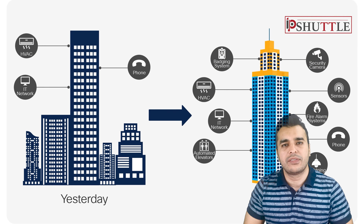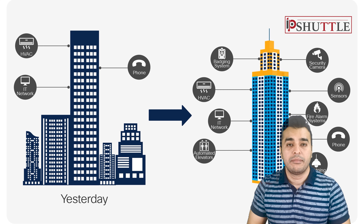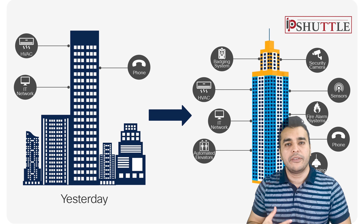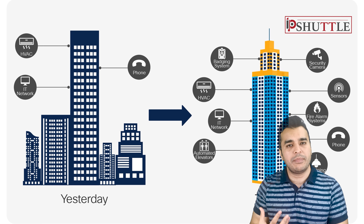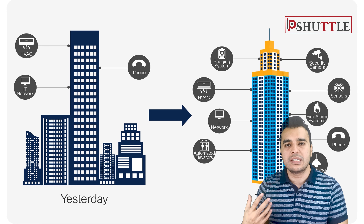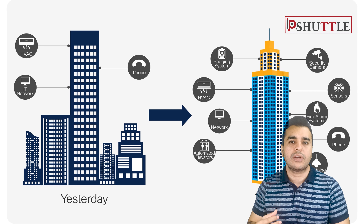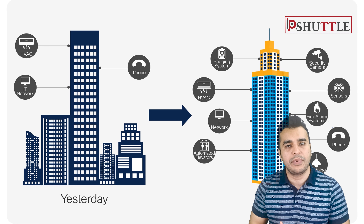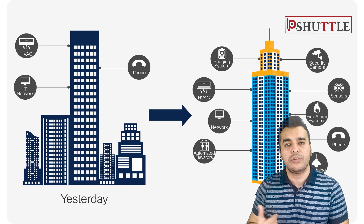Going back four or five years, the main network-connected devices were IP phones and access points. But today, buildings are smart — devices like Alexa, home appliances, IP TVs, IP phones, access points, CCTV, and building management systems are all connected. These consume a lot of power, so you cannot power all devices from a standard PoE switch. This is where PoE, PoE Plus, UPoE, and UPoE Plus standards come in.